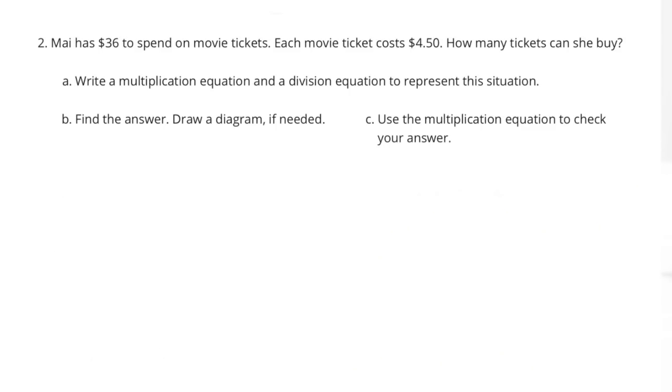Number 2. Mai has $36 to spend on movie tickets. Each movie ticket costs $4.50. How many tickets can she buy?